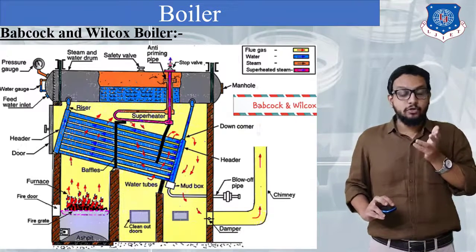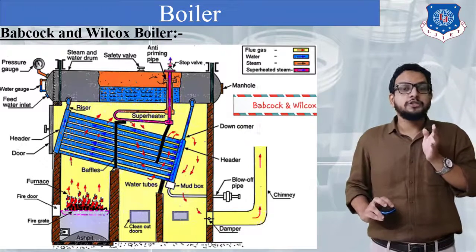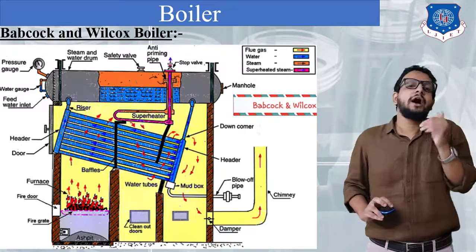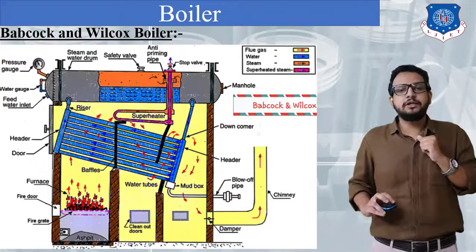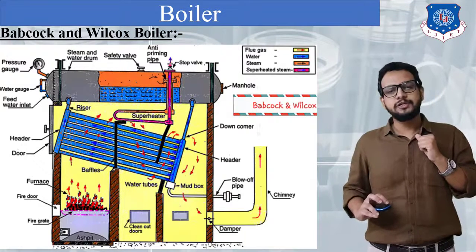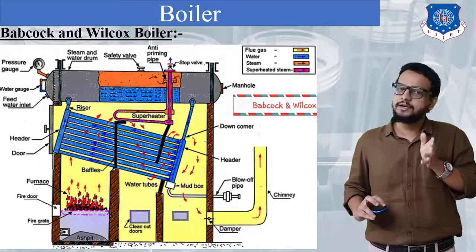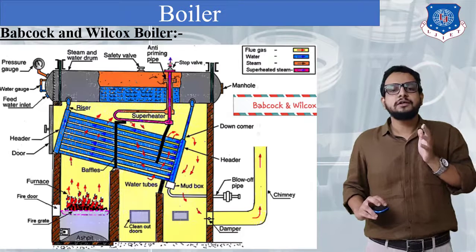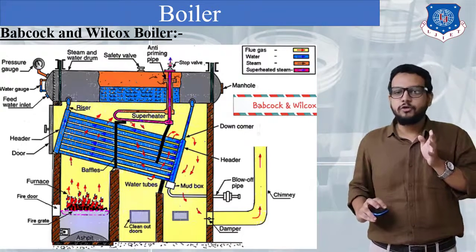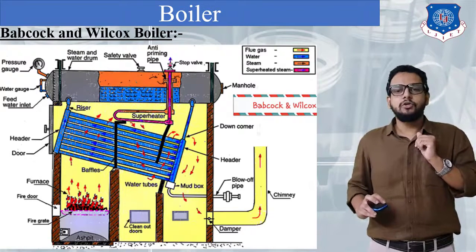Now talking about pressure: the pressure of this boiler is 40 bar, which means it comes under the category of a high pressure boiler. Since the water tubes are kept at an inclination, natural circulation of water will take place due to density difference. Whereas the flow of hot gases will be forced, so this circulation of hot gases will be called forced circulation of hot gases.